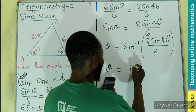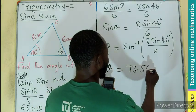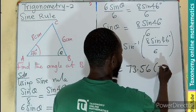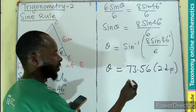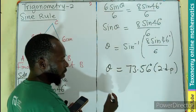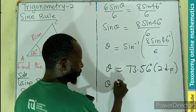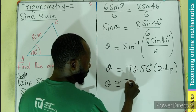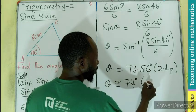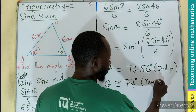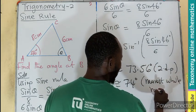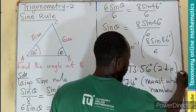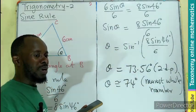So we will do that. That will give you theta equals 73.56 degrees. Let's leave that to two decimal places. Or we can approximate this to 74 degrees to the nearest whole number.